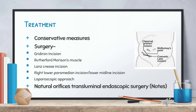Surgical options: Appendicectomy is done through different approaches — gridiron incision, Rutherford-Morrison's incision, crease incision (Lanz incision), right lower paramedian incision, or lower midline incision when in doubt or when there is diffuse peritonitis. The laparoscopic approach is the newer, popular, and ideal method and has become the gold standard. Another innovative technique is Natural Orifice Transluminal Endoscopic Surgery (NOTES) — appendicectomy through transvaginal, transrectal, or transgastric approach.